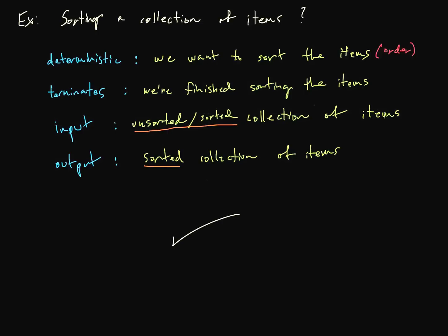And we also have an input, which is a collection of items, sorted or unsorted. If they're already sorted then we're done. And the output is obviously the sorted collection of items.